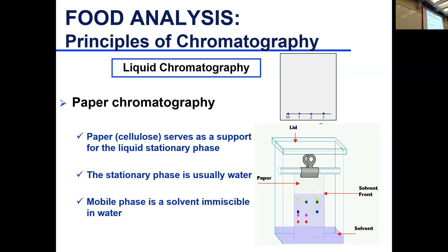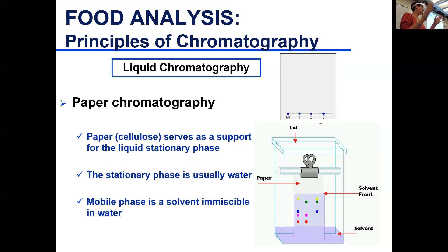We did it separating colors. Amino acids are also very common because they give pretty colors when you separate them and then spray them with ninhydrin — you get colors and can see the spots.